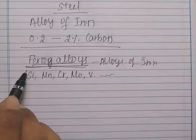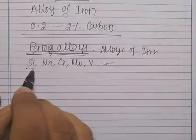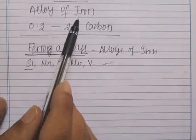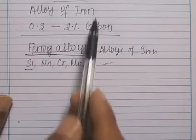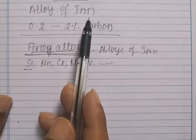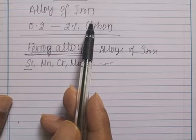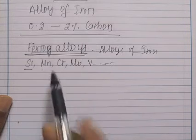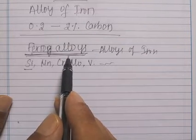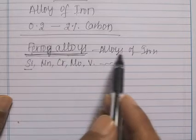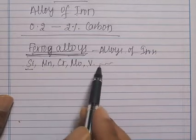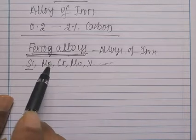These ferro alloys are used to introduce the alloying elements during the manufacturing of steel. Silicon, manganese, chromium, molybdenum, or vanadium can be introduced into the iron. Whenever an element is introduced, the properties of the steel get altered. Ferro alloys are alloys of iron with silicon, manganese, chromium, molybdenum, vanadium, etc., used to introduce alloying elements into the steel.